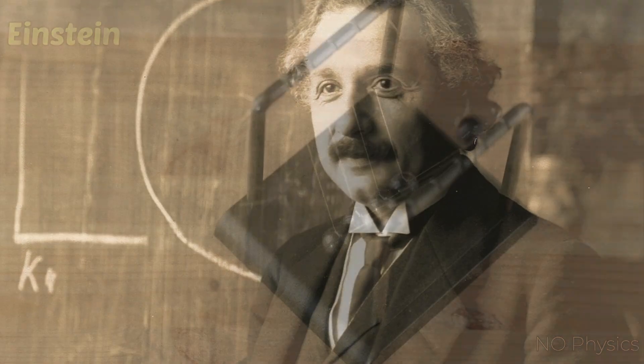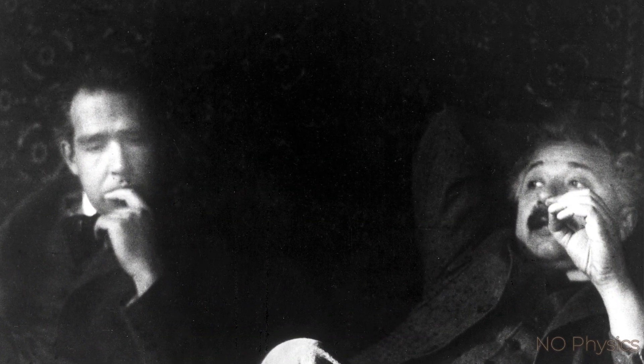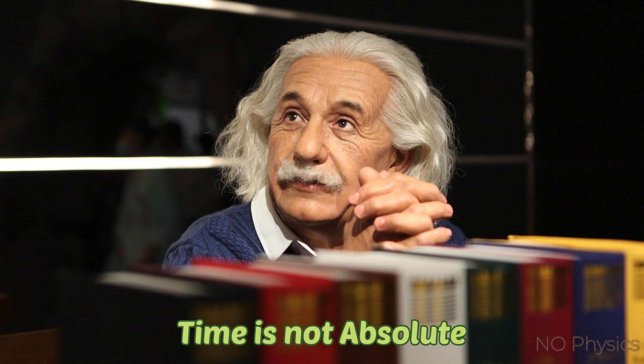The youthful Einstein was very much attracted by Mach's ideas on the foundation of Newtonian physics. Einstein and his close friend Michele Besso regularly discussed science and philosophy, including the nature of time. After one such discussion, Einstein came to a sudden realization that time is not absolute.